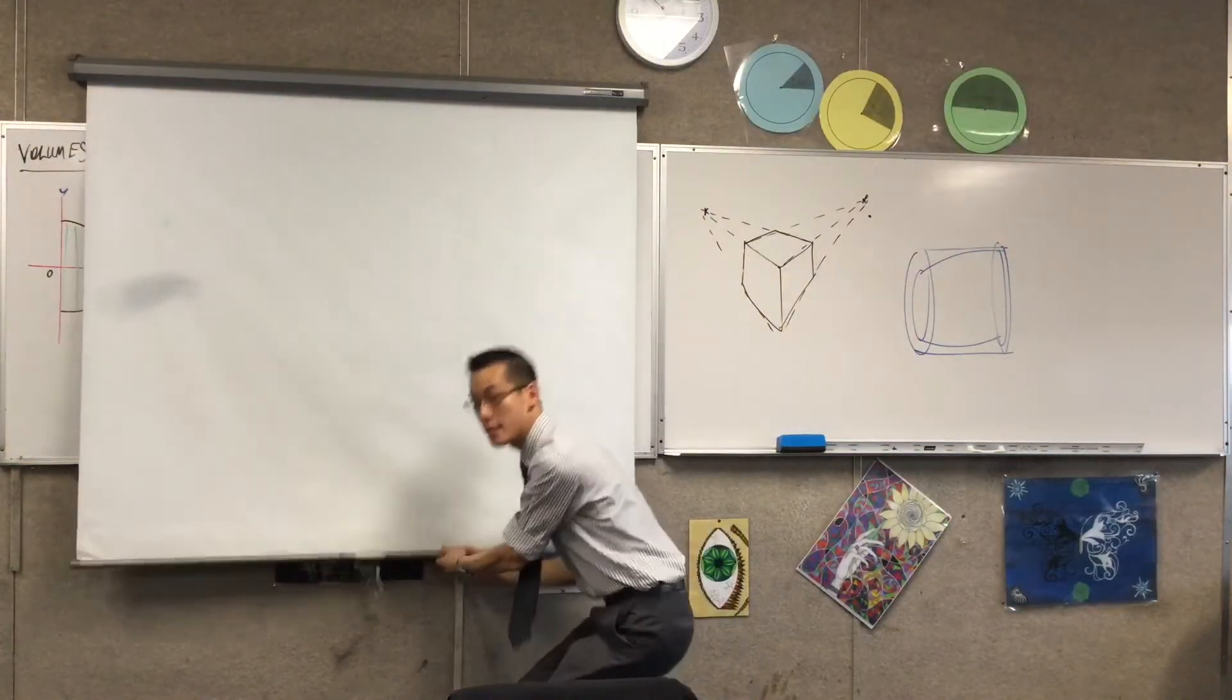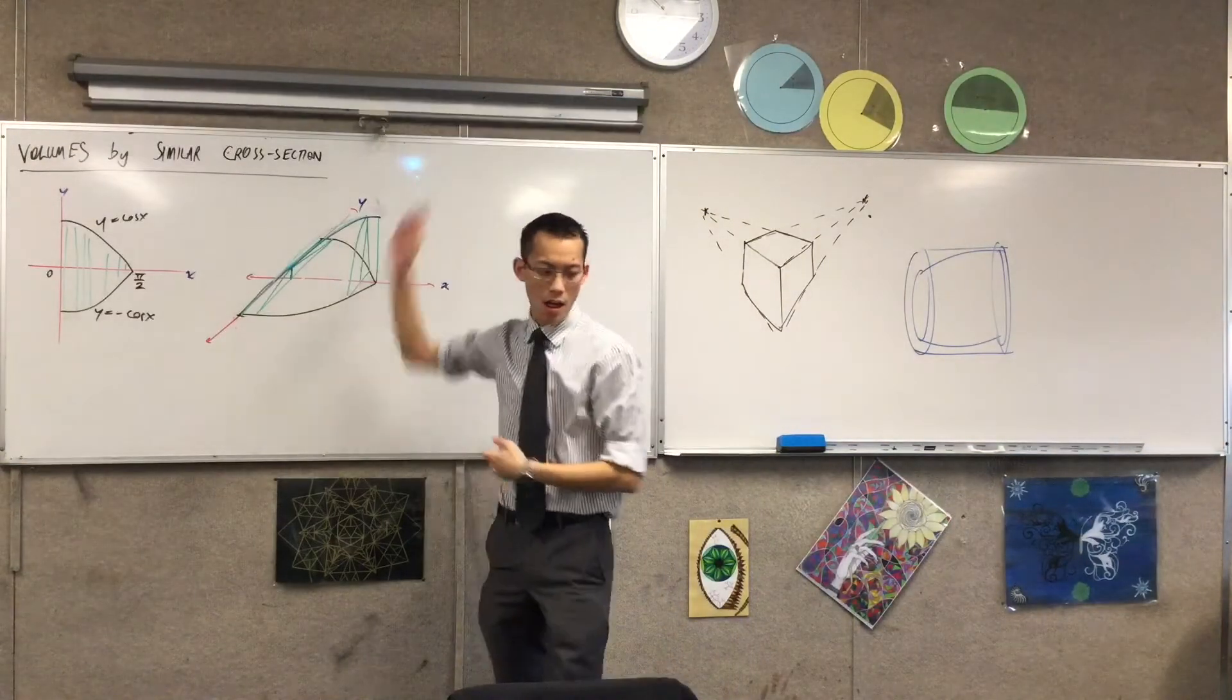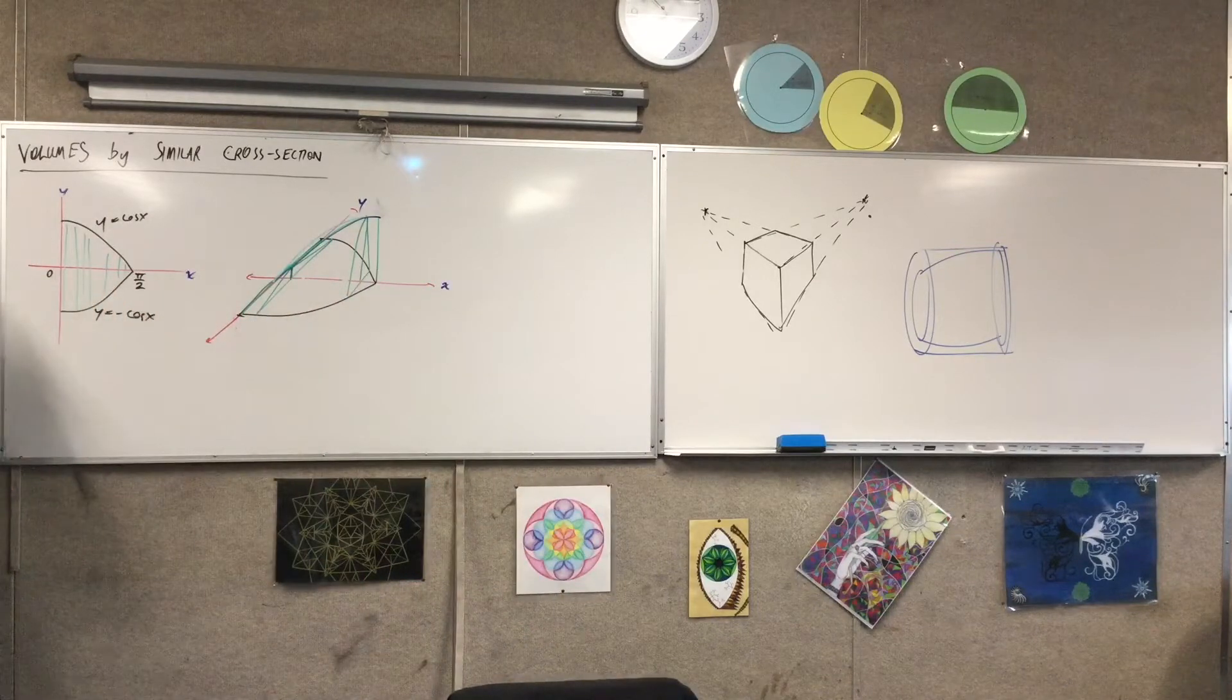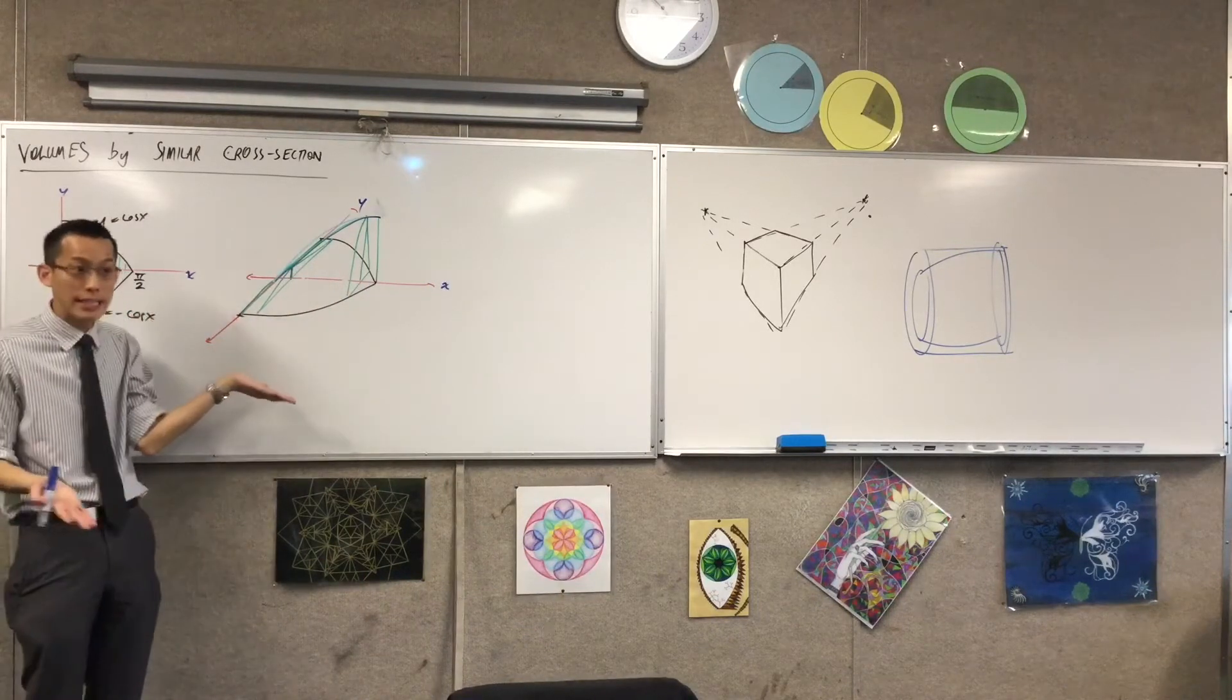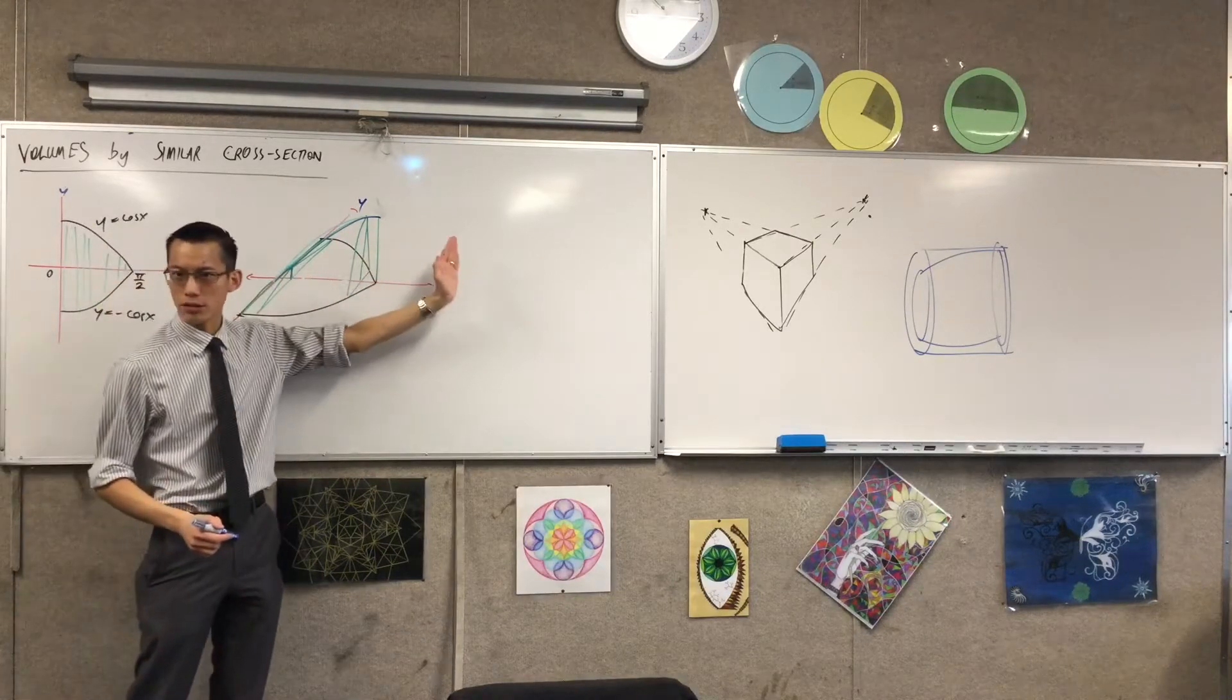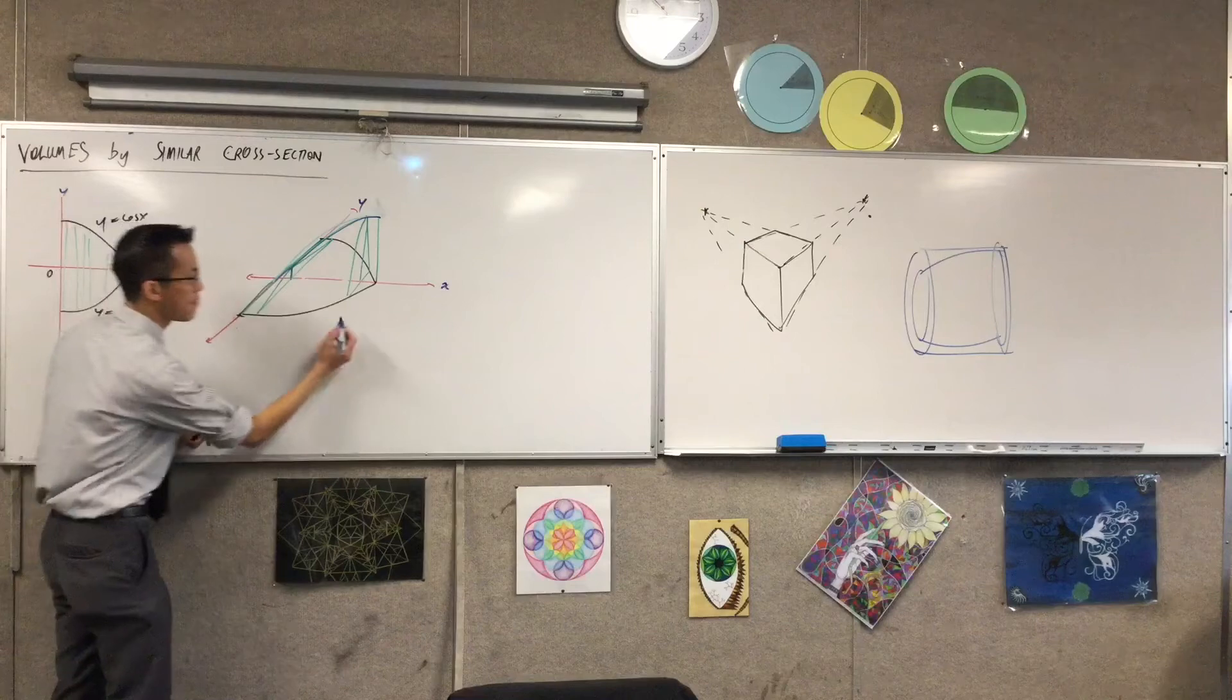There is one extra diagram, and it's a simple one. There's one extra diagram we need to actually work out this volume. The important thing is, it's these triangles, clearly. Once I work out the area of each of these triangles, I'm going to multiply by a width.